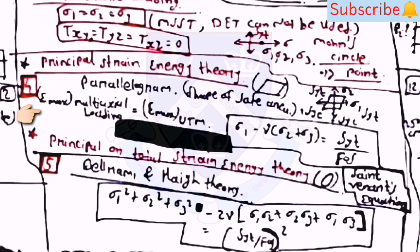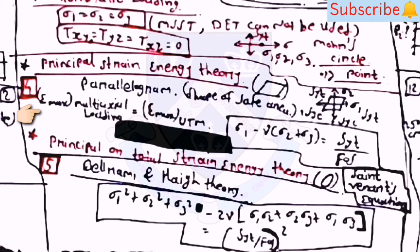The fourth theory from the five types of theories of failure is the Principal Strain Energy Theory. The shape of the safe area is like a parallelogram. The equation is: sigma_1 − mu·(sigma_2 + sigma_3) = SYT/FOS. This is also known as Saint-Venant's equation.